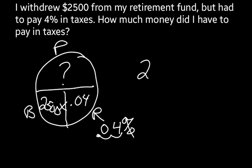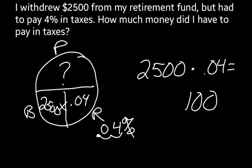So $2,500 times 0.04 — when I multiply that out, I get $100. So $100 is what I'll need to pay in taxes. That's the portion: 4% of $2,500.